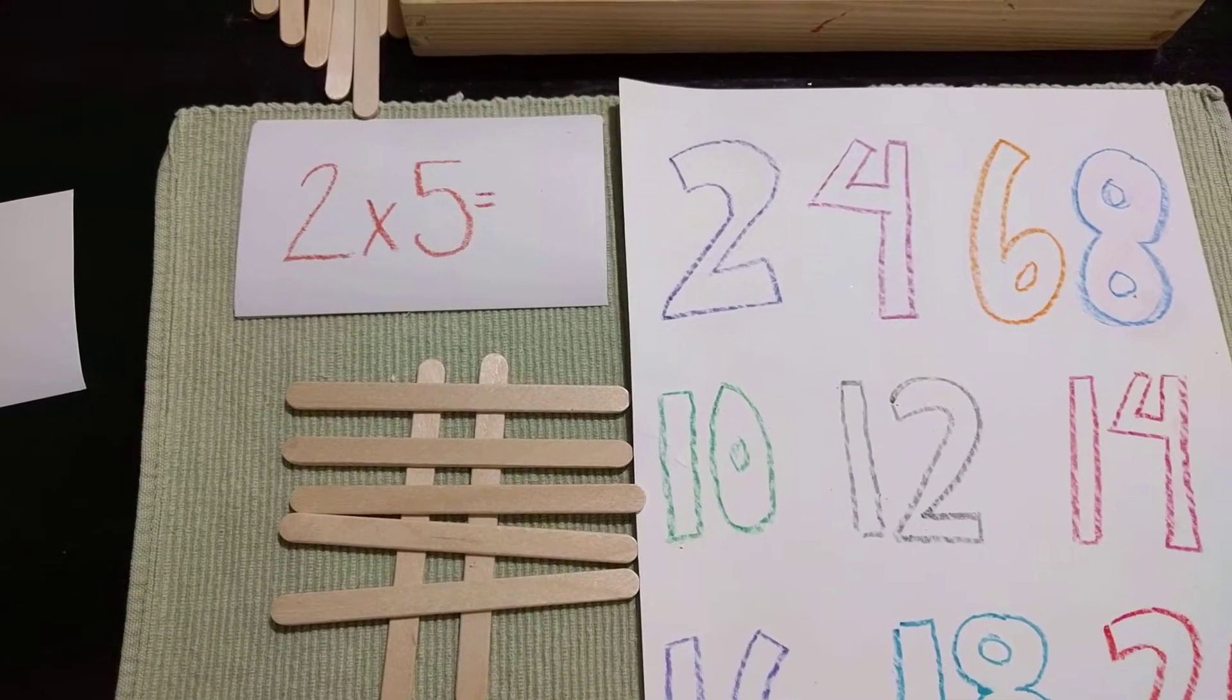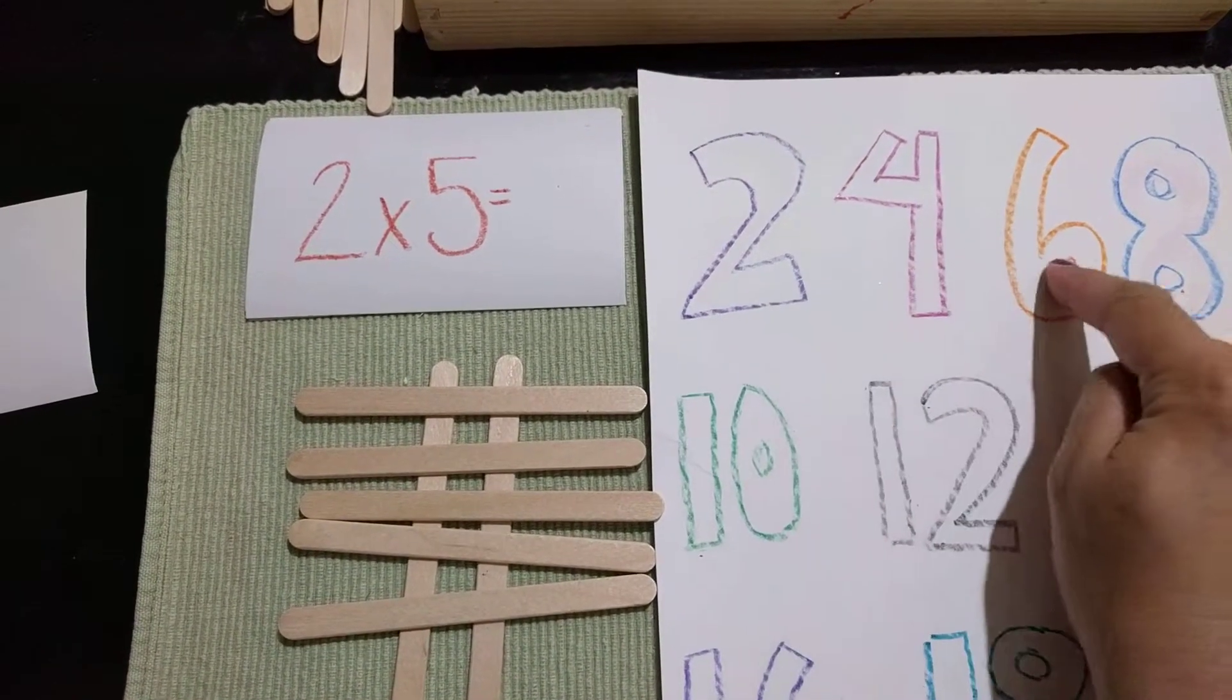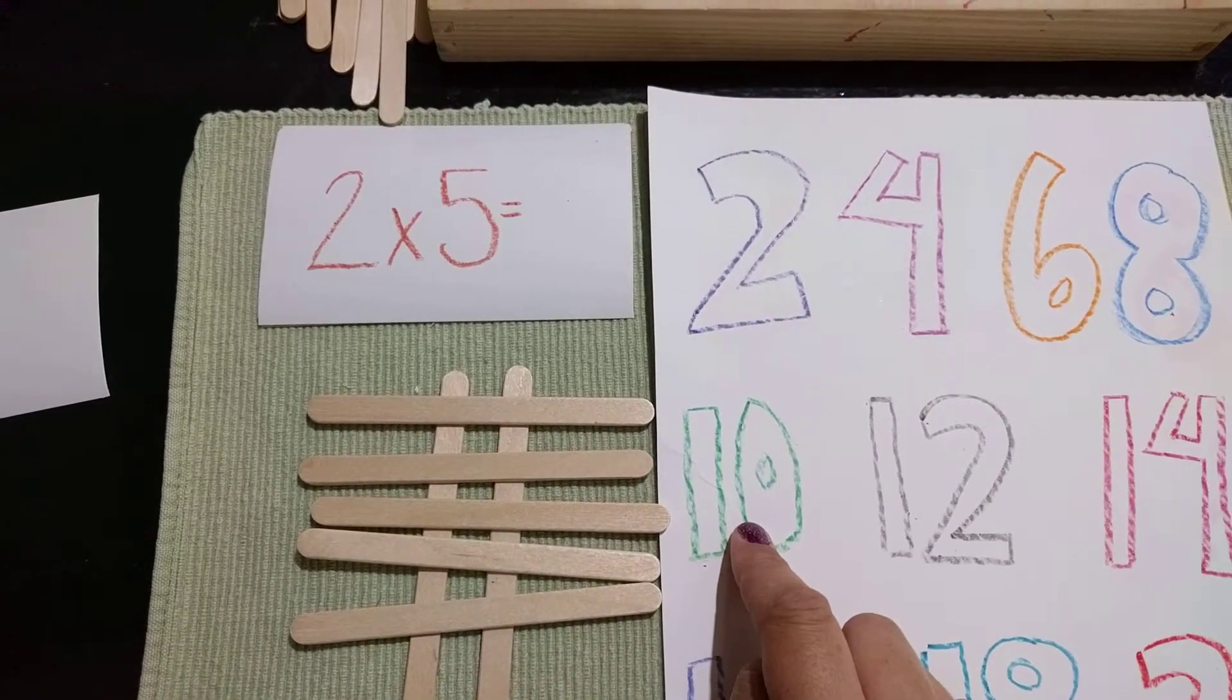Or we could do it this way. 2 times 5. 1, 2, 3, 4, 5. 2 times 5 is 10.